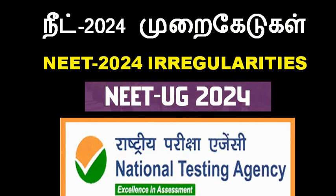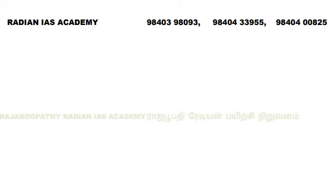The results were declared on June 14. Let's look at the results in June 14. The results in June 14 are very important. The UG NEET result is on June 24.